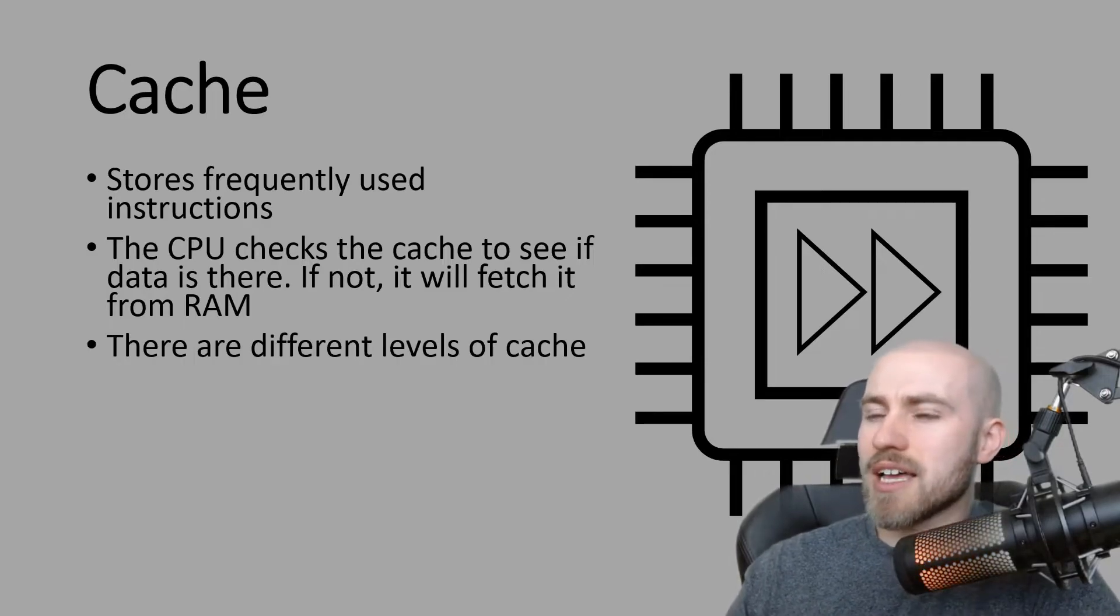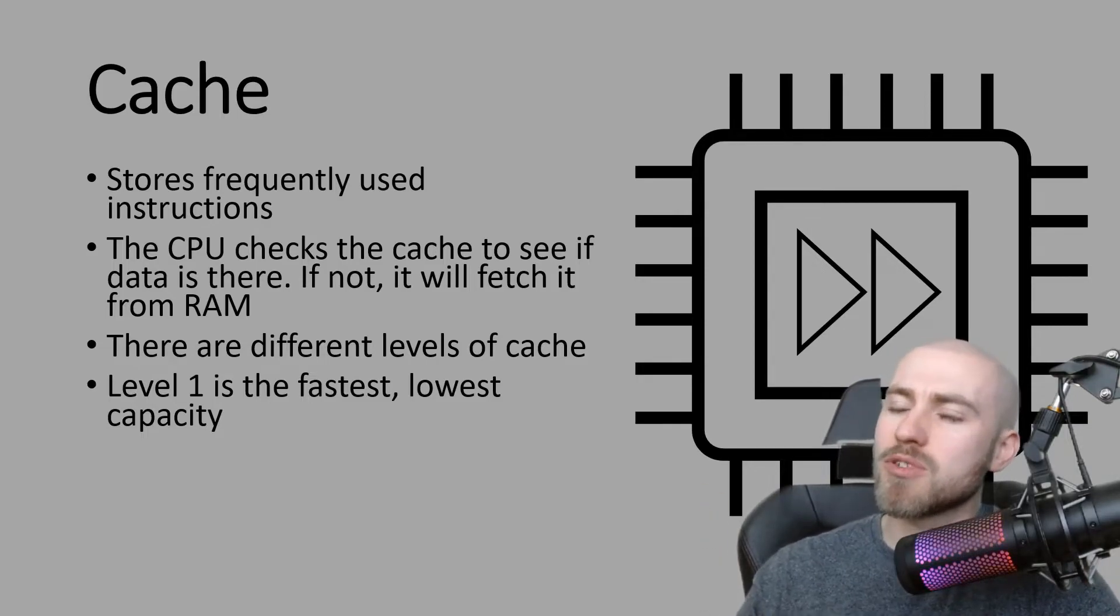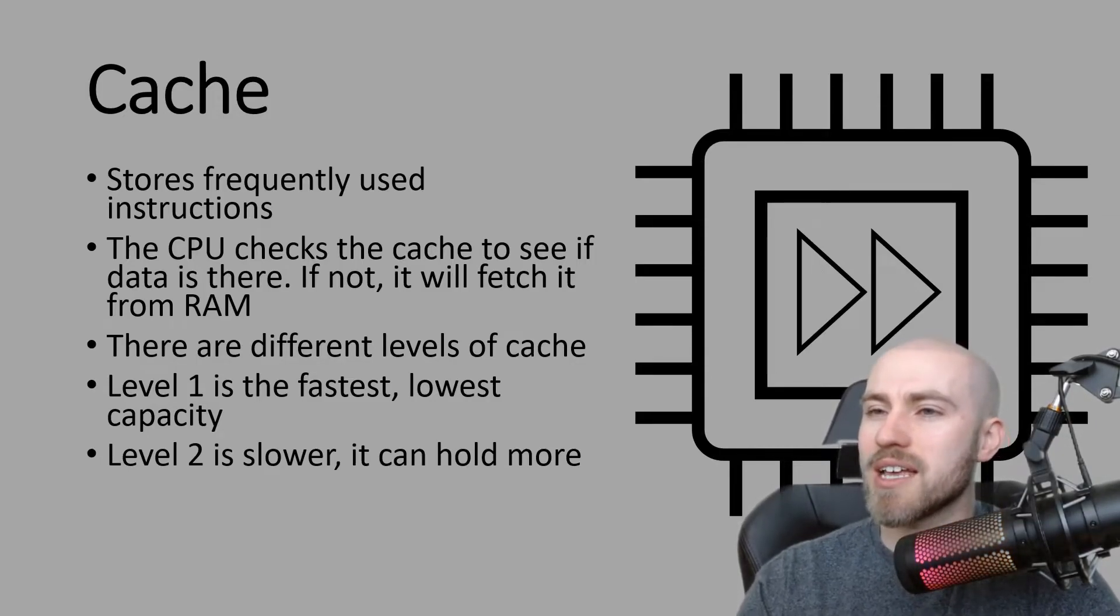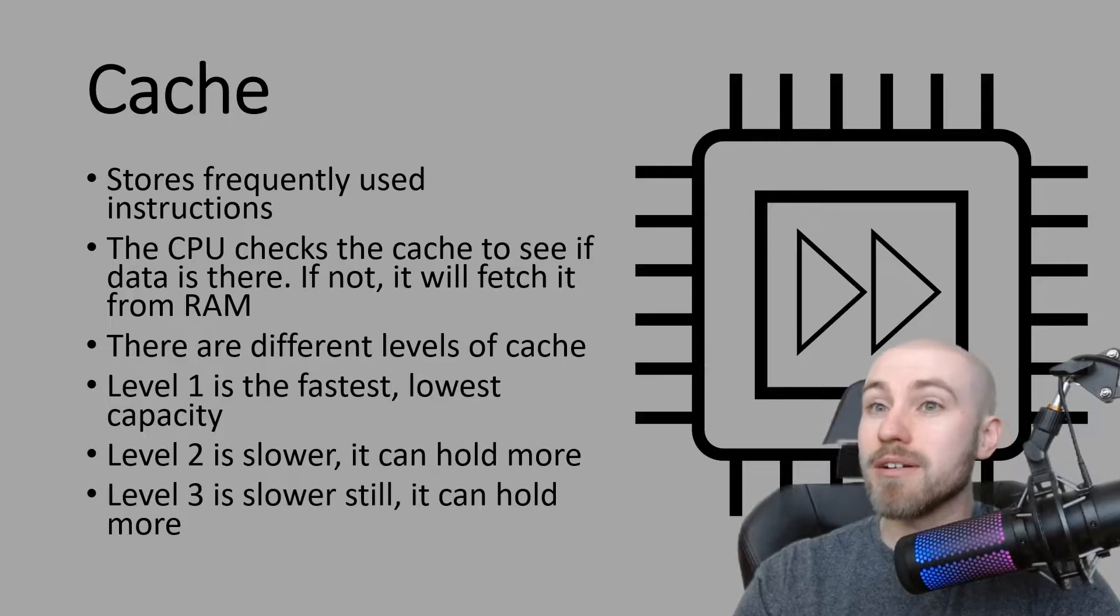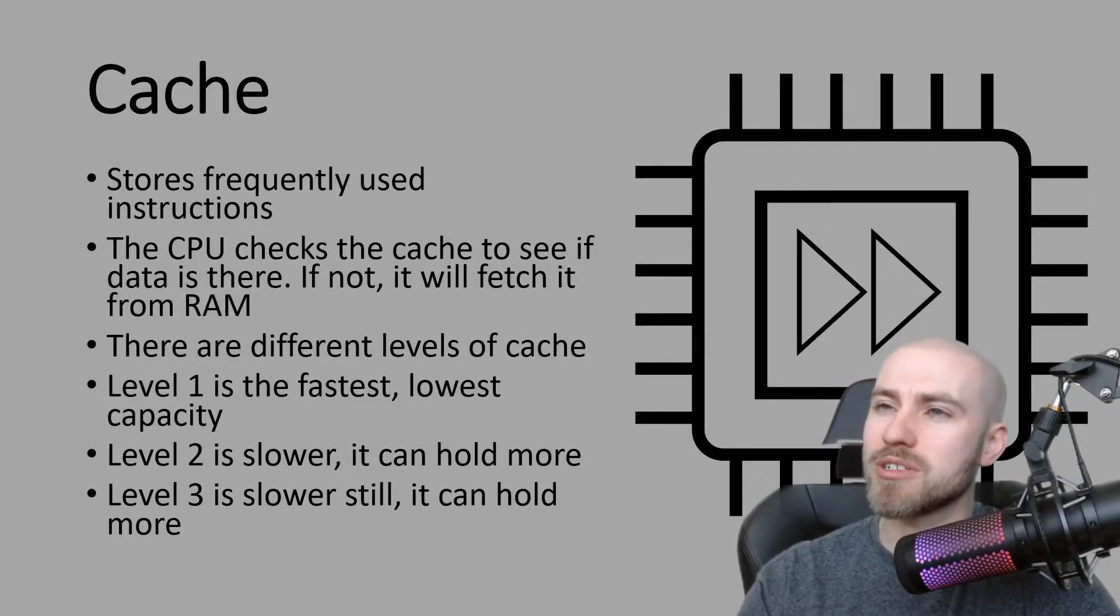Now one thing that we didn't mention last time was that there are different levels of cache. So level one is the fastest, and because it's so fast it does have the lowest amount of storage as well. And it kind of follows that pattern. So level two is not as fast but then it can hold more data. And finally we've got level three. Again, even slower but it can hold the most data out of the three levels of cache. But your main thing that you need to know from cache is that it stores frequently used instructions.